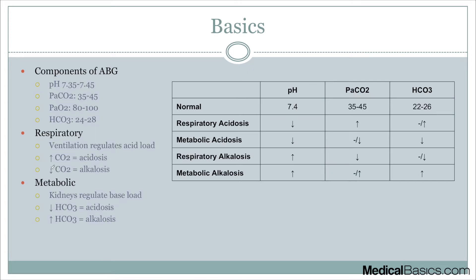Once we determine whether something is acidotic versus alkalotic, we have to think about respiratory versus metabolic. The easiest way is to look at CO2 — CO2 has to do with respiration. A high CO2 means we are hypoventilating, retaining CO2, which leads to acidosis because CO2 breaks down into hydrogen ions. A low CO2 means we're hyperventilating and blowing off excess CO2, leading to alkalosis. The converse is true for metabolic — we always think about bicarb. The kidneys regulate our base load by creating bicarb. A lower bicarb leads to acidosis and a higher bicarb leads to alkalosis.